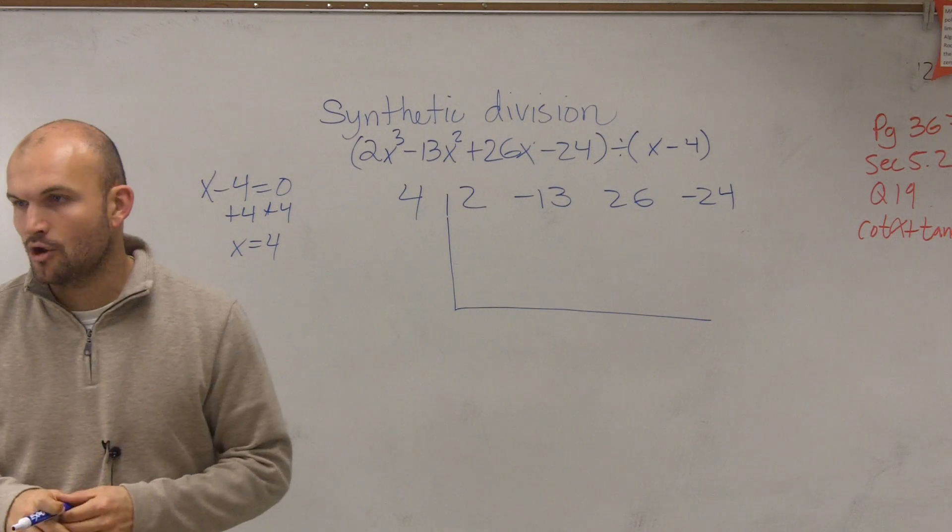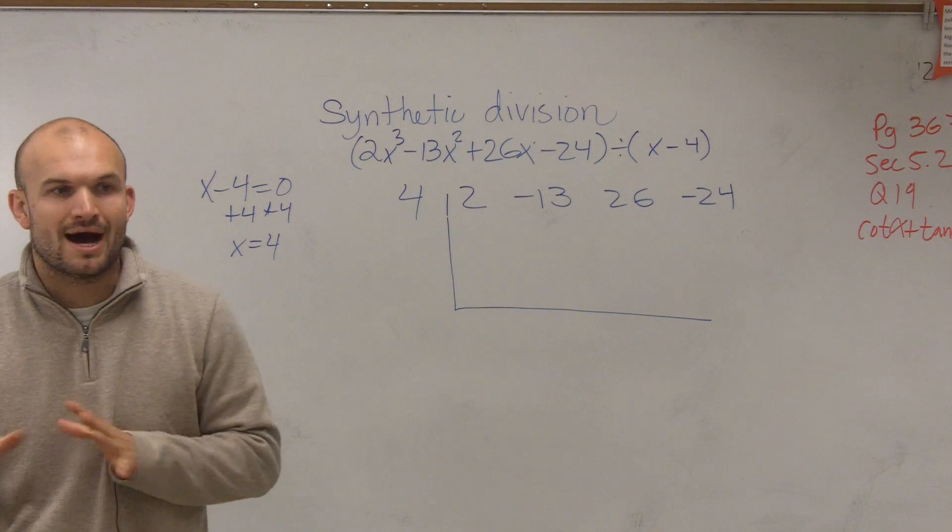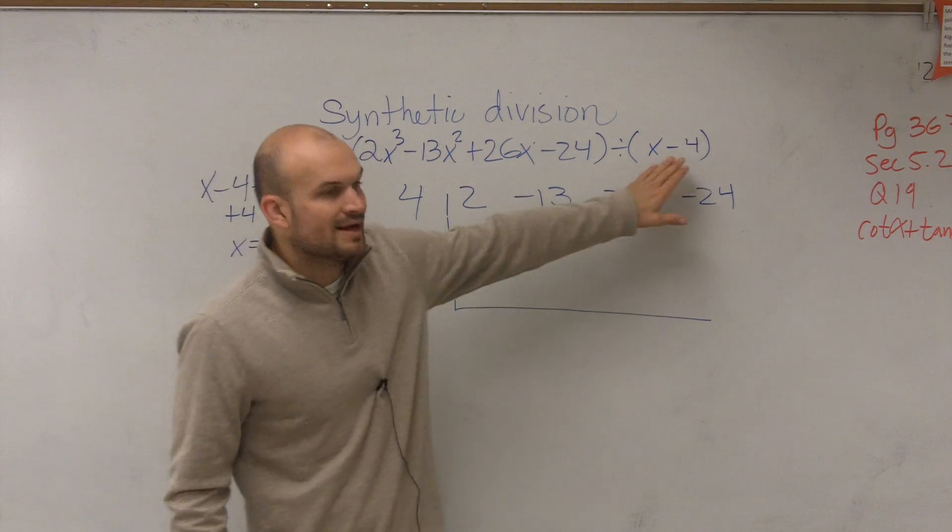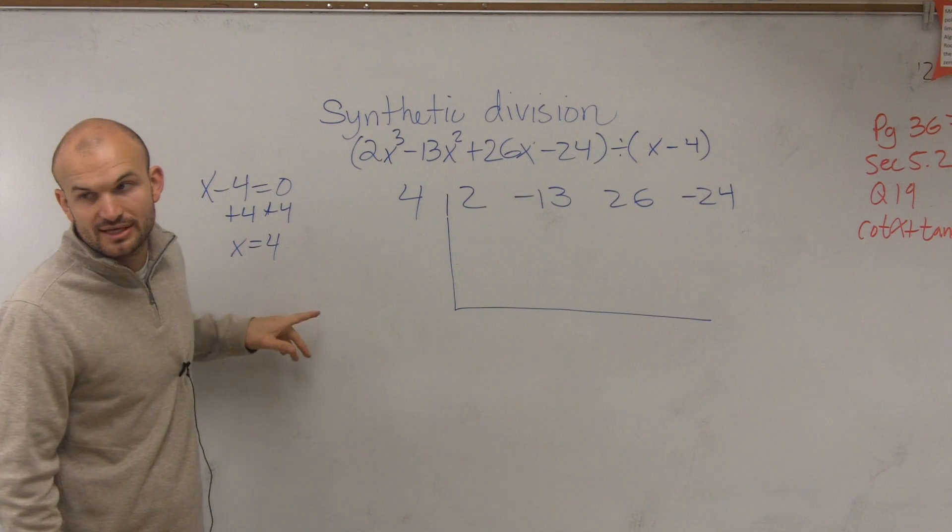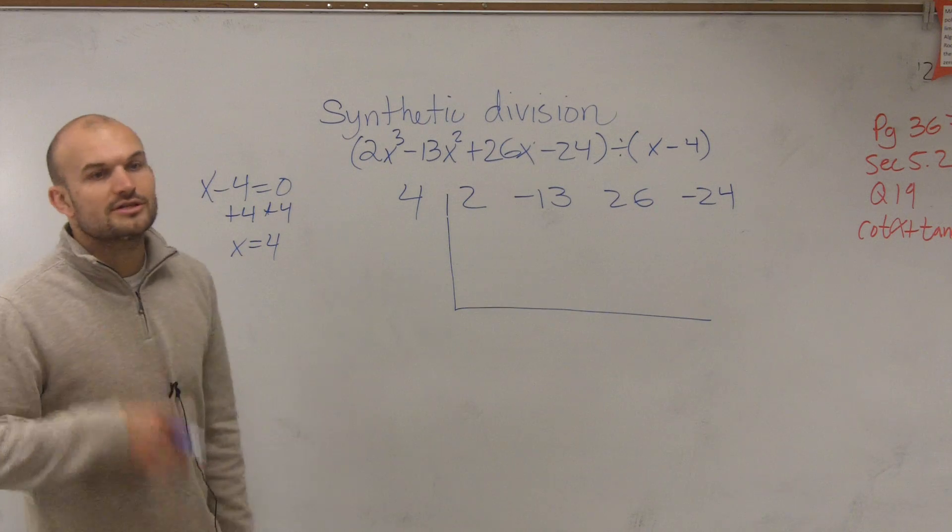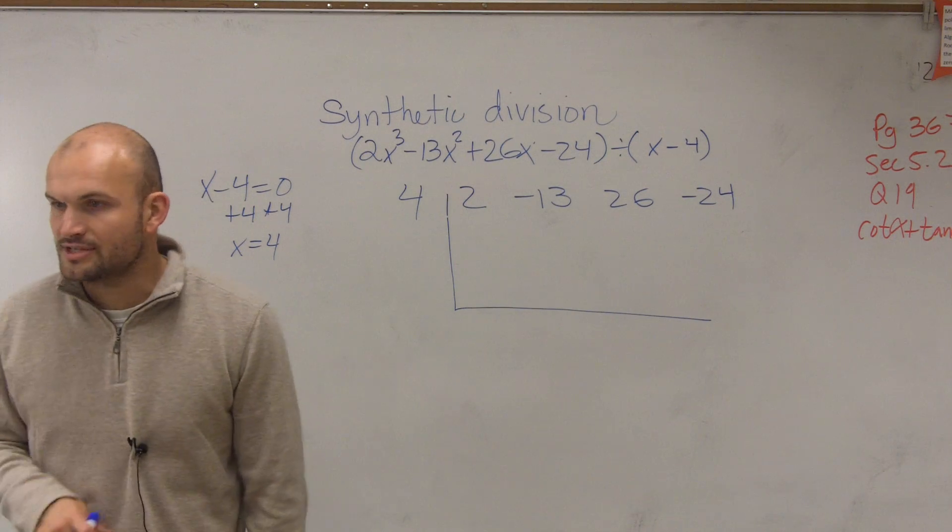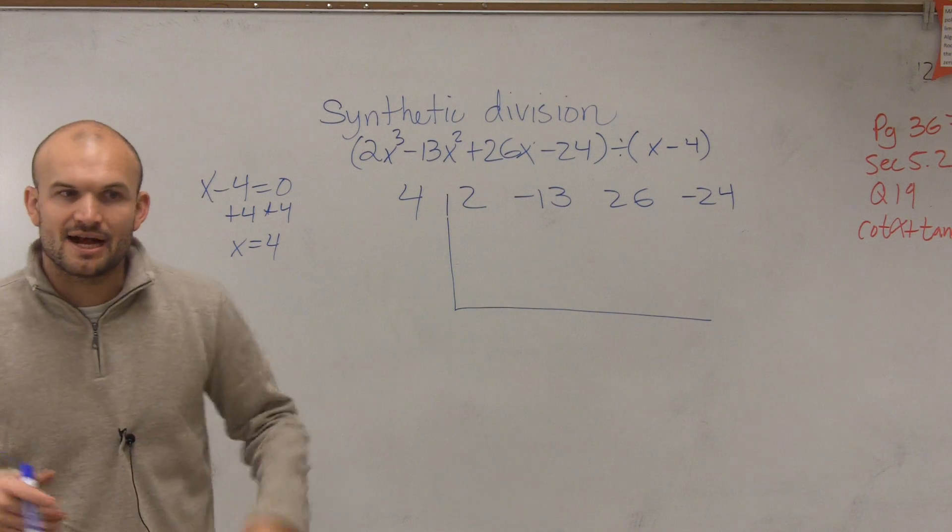That is going to be the number you're going to be dividing by as your divisor. We'll explain a little bit more about that later. For right now, just take your divisor, set it equal to 0, and that's going to be what you're going to use for your synthetic division. So here's the process. It's very basic. I'll leave it up here as you guys practice. It's pretty easy to follow.